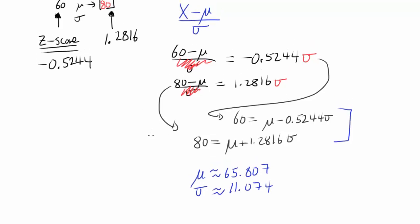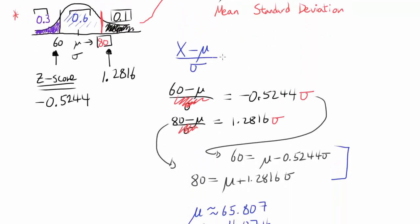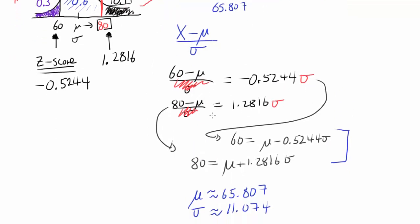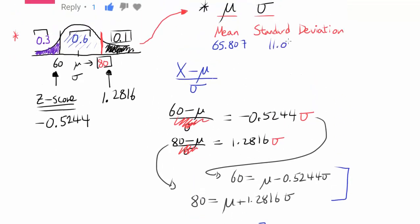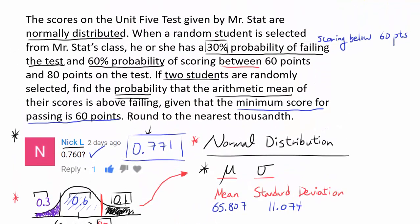Now we know mean and standard deviation: μ ≈ 65.807 and σ ≈ 11.074. We want to find the probability that the arithmetic mean of a sample of n = 2 students is above the failing score of 60. To do this, we need to apply a very famous — arguably the most important — theorem in statistics.